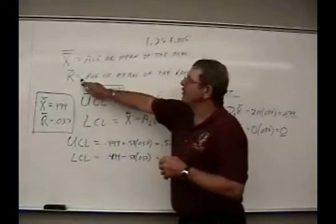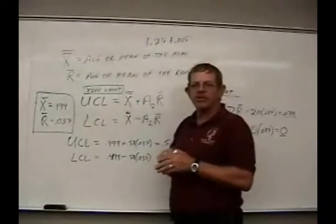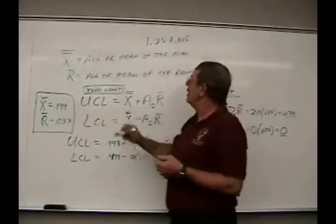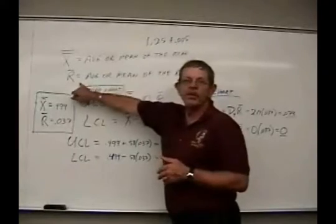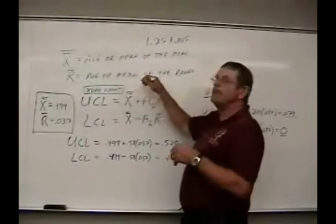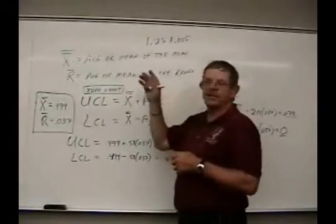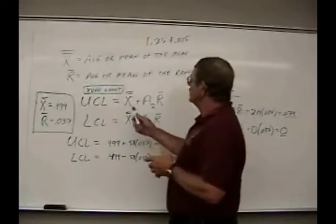So what you would do after you measure all 20 sets of the range, you would add up all the range parts, divide by 20, and that would be your r bar, or the average mean value of the range numbers achieved.